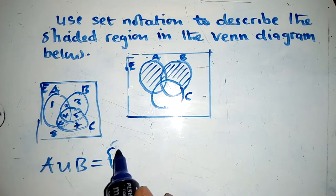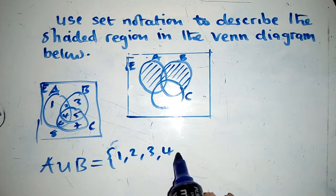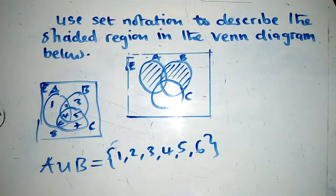So A union B will be 1, 2, 3, 4, 5, 6. So this is A union B.